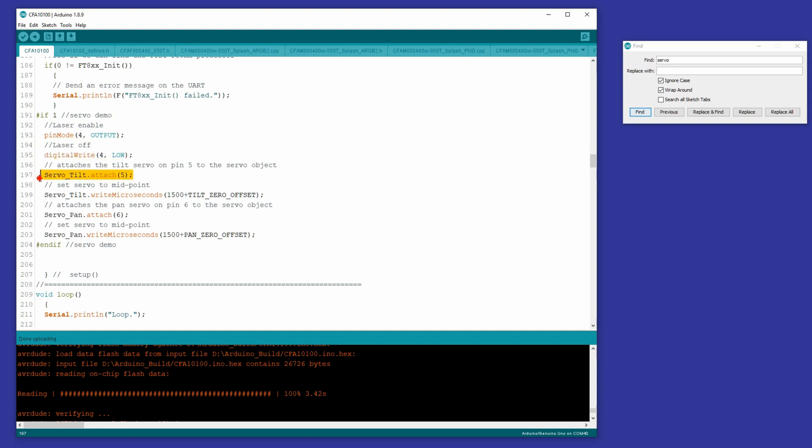Then you attach the servos, which tells the tilt servo object that it's going to use pin five, and the pan servo's going to use pin six. And then just kind of for completeness to make sure the library's in the correct position, we write 1500 plus our little offset out there, which centers those two servos.